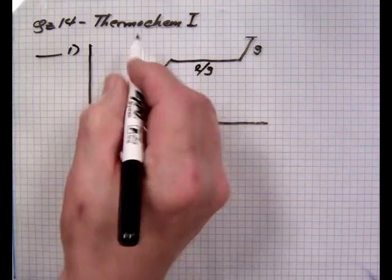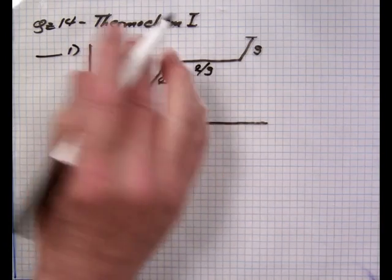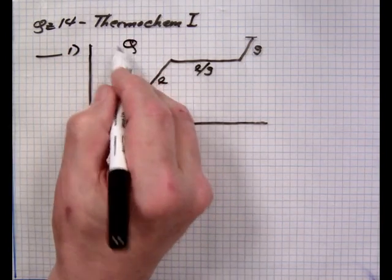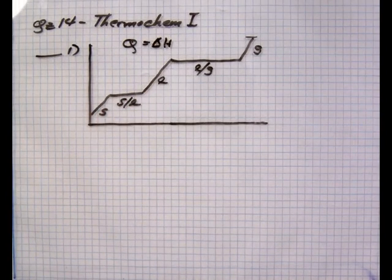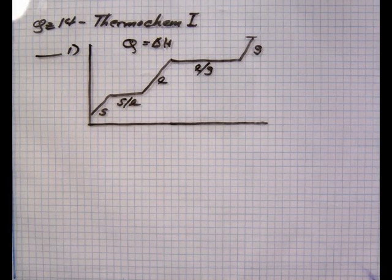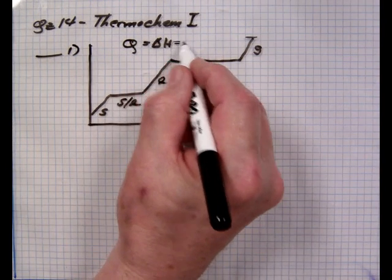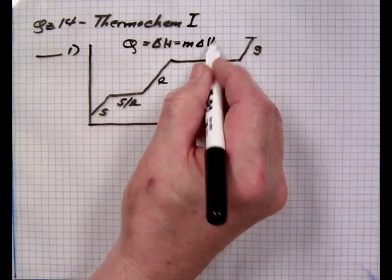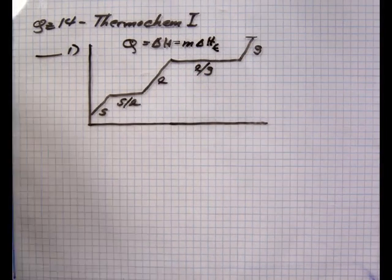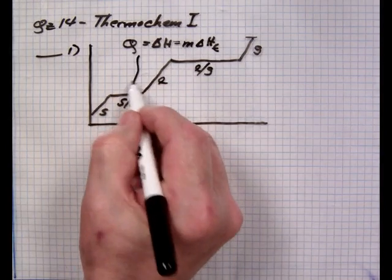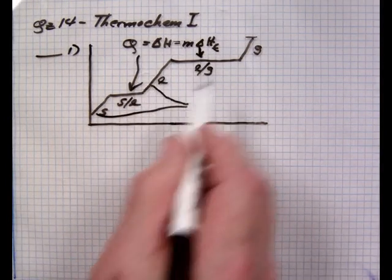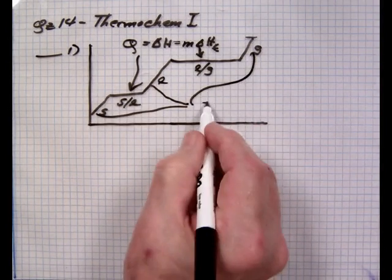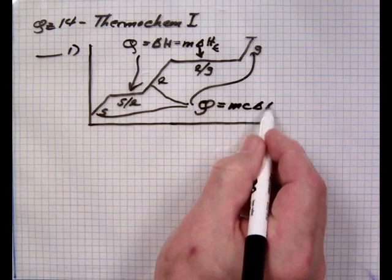If there is no temperature change, we use Q for heat or delta H - both are the same. You'll run into both terms in various textbooks. It equals M delta H of transition. If you are in a temperature change condition, Q equals MC delta T.